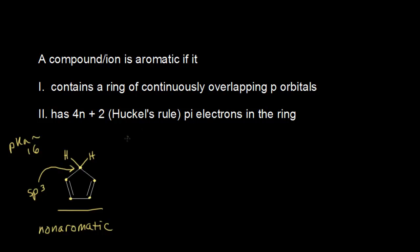If we think about a base coming along — I'm showing a lone pair of electrons with a negative charge, some generic base — it's going to take this proton, leaving these two electrons behind on the top carbon. If we draw the structure of the conjugate base, we have our pi electrons and now a lone pair of electrons on the top carbon, making it negatively charged.